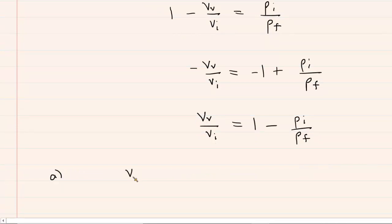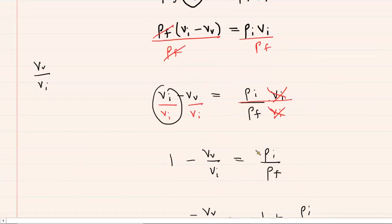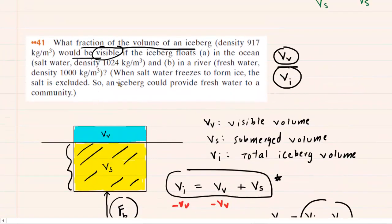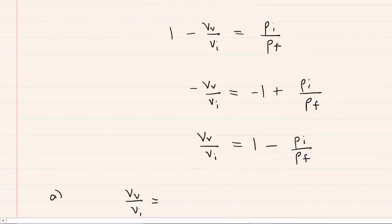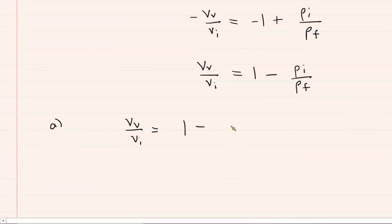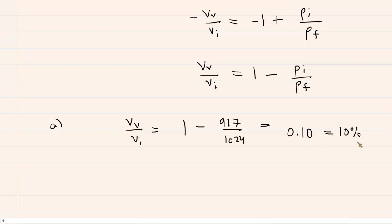For part A, the iceberg is floating in salt water. The density of salt water is 1,024 kg/m³ and the density of the iceberg is 917 kg/m³. So we calculate 1 minus 917 over 1,024, which gives approximately 0.10, or 10%. So about 10% of the entire iceberg is visible above the surface.